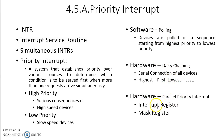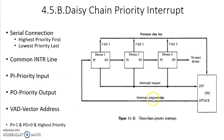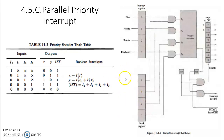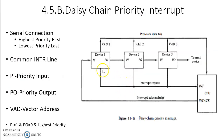Parallel priority interrupt is far better than polling or daisy chaining because it does not waste much time — it will directly go to the input-output device which had sent the interrupt request. It uses an interrupt register and a mask register for this purpose. Now let us look at the daisy chaining priority interrupt.